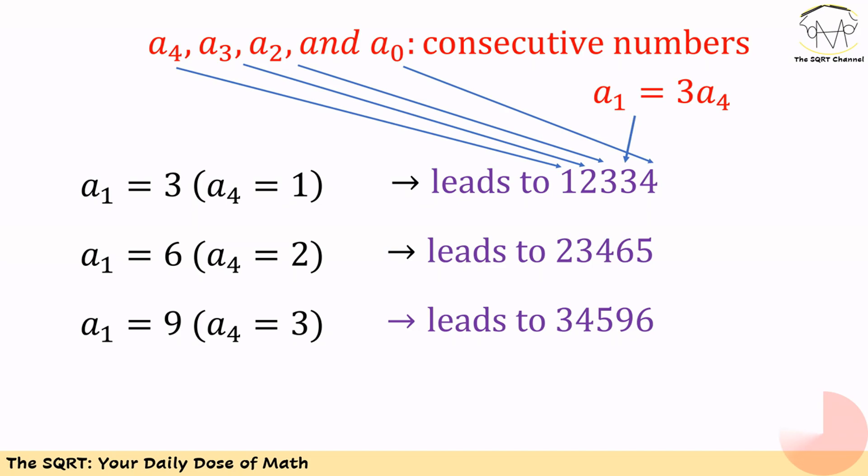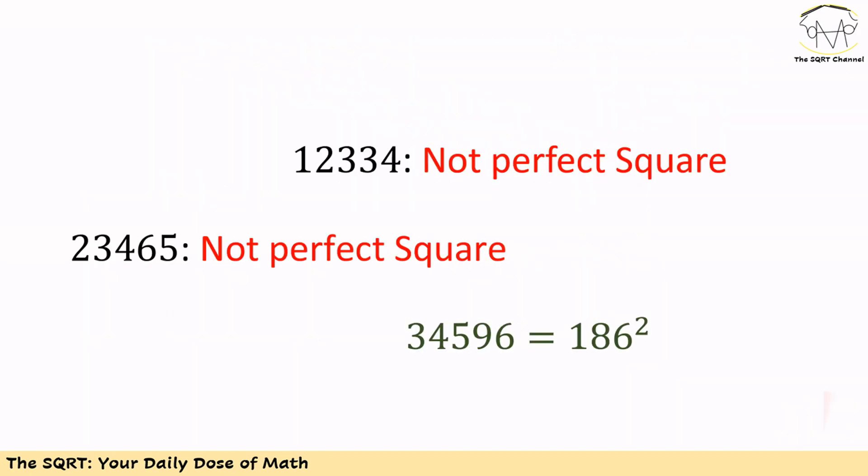Which of these is the actual number we are looking for? We need to understand which one of these numbers is a perfect square. 12334 is not a perfect square number. 23465 is also not a perfect square number. However, 34596 is actually 186 squared, so that's our number.